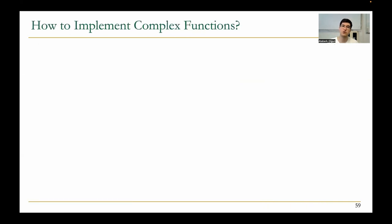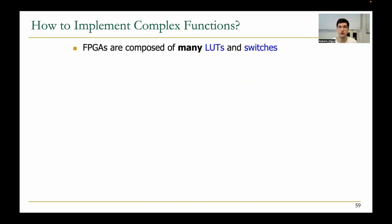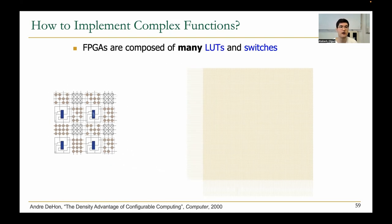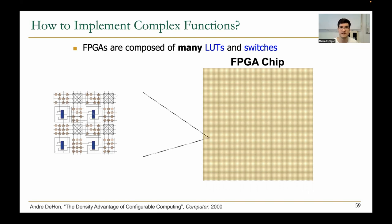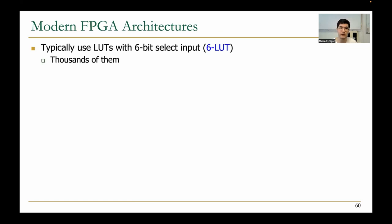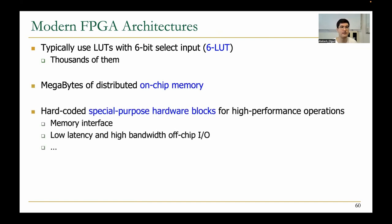How do we implement more complex functions? FPGAs are composed of many lookup tables and switches, and that's what enables us to implement complex functions. Modern FPGA architectures typically use more powerful lookup tables with 6-bit select inputs so you can implement any 6-bit Boolean function, and they implement thousands of these. There will be megabytes of distributed on-chip memory to store state, and hard-coded special-purpose hardware blocks for high-performance operations such as interfacing with memory chips and high-bandwidth off-chip interfaces.